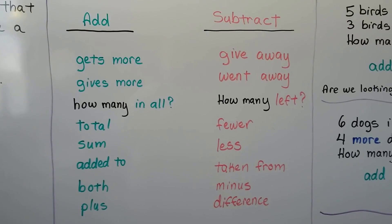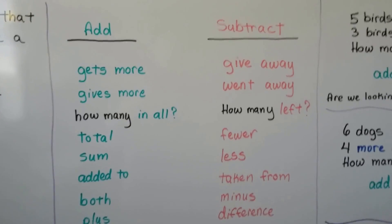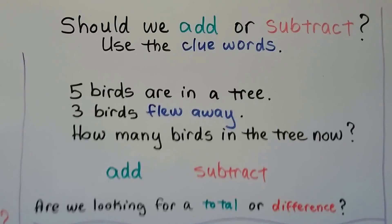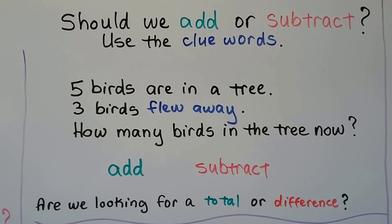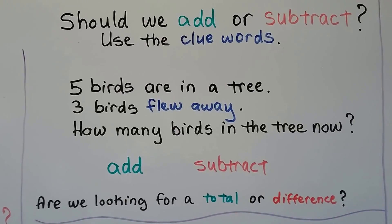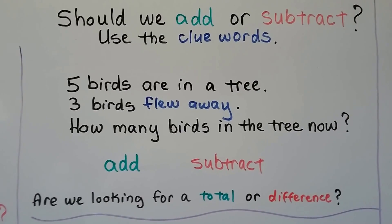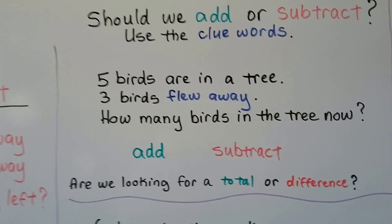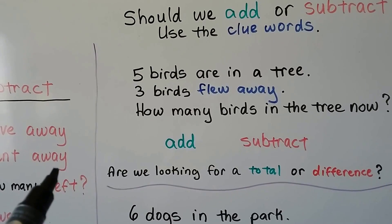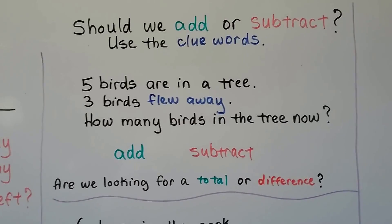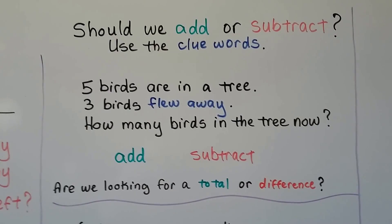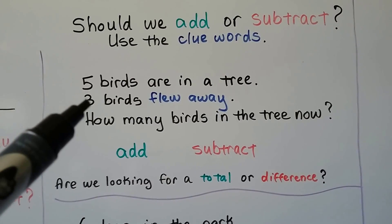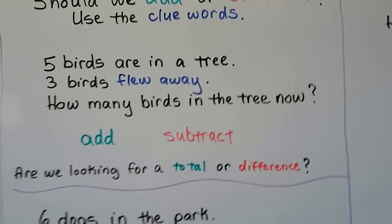If we're looking for a total, we know we need to add. If we're looking for a difference, we know we need to subtract. For example: five birds are in a tree, three birds flew away — how many birds are in the tree now? We use the clue words 'flew away' to know that's subtraction. We're looking for the difference between the birds that were in the tree and the three that flew away.